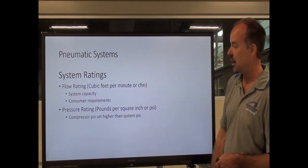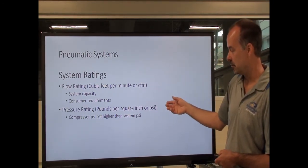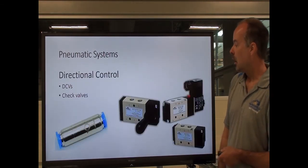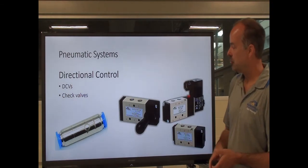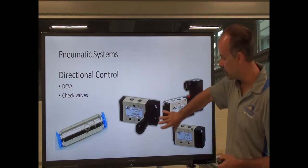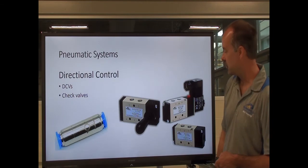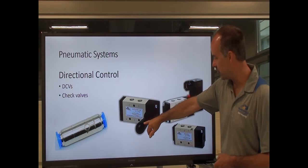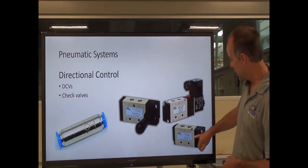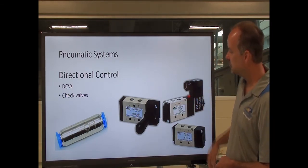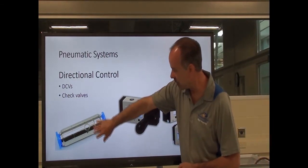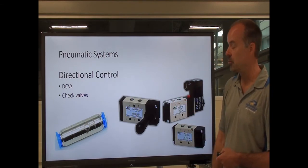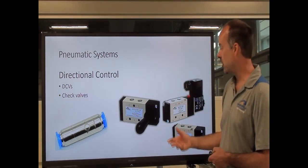Pressure rating: just like in a hydraulic system, pressure is in pounds per square inch (PSI). Components you're going to find include directional control valves — they're made a little differently, but they perform the same function and have a lot of the same types of operators found in hydraulics: levers, pilot operated, solenoid operated. We also have check valves; they perform the same function, but the construction is a little different for pneumatics versus hydraulics.